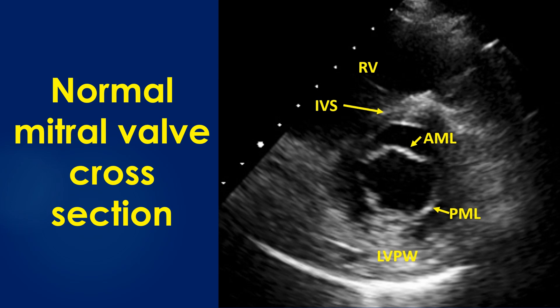The leaflets of a normal mitral valve are thin, pliable, non-calcified, and open well in diastole with a valve area of 4 to 6 cm². Opening of a normal mitral valve may be reduced in low cardiac output states even without significant mitral stenosis.